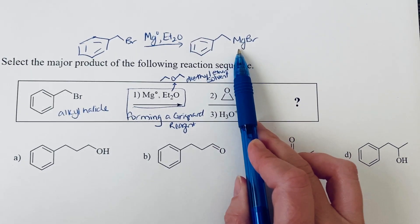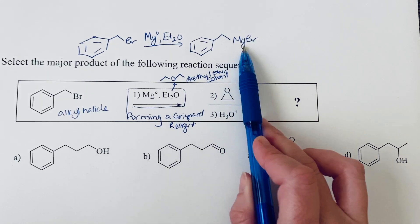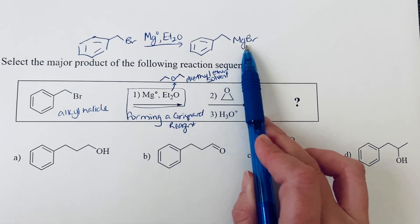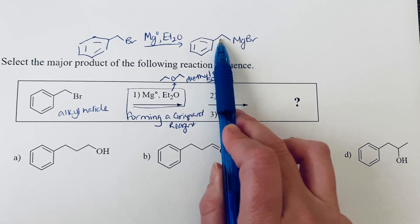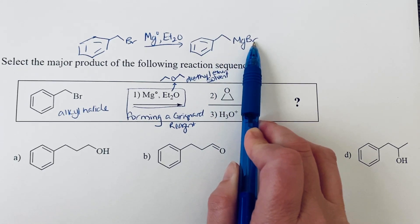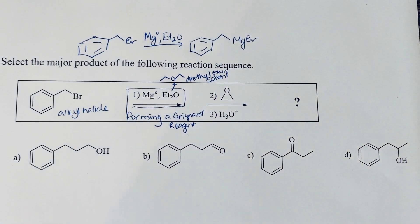Magnesium is in the second column on the periodic table, so when it forms an ion, it forms a 2+ ion. So it has a negative charge essentially from this carbon atom, and a negative charge from the bromine balancing out that 2+ charge.